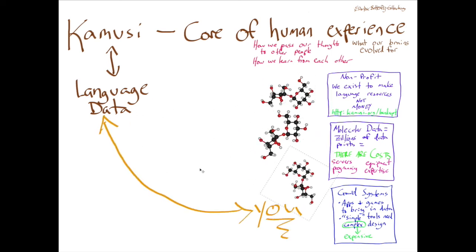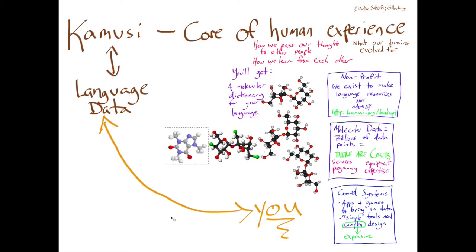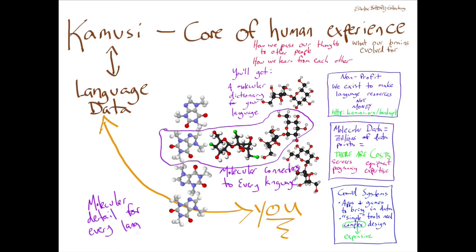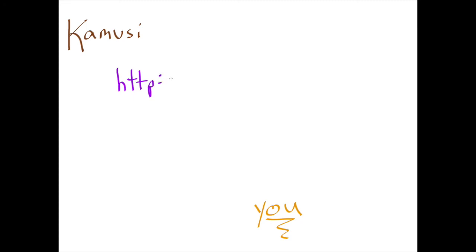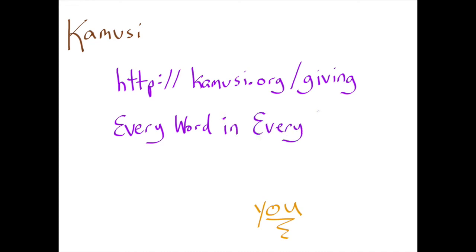In return, over time, you'll start getting a molecular dictionary for your language, as well as a data set providing core data for advanced technology applications. Your language will be linked at this molecular level to every other language in the system, and you'll support the growth of data sets for every other language — even for people who aren't in a position to pay for it themselves. There's no government ministry or academic organization with plans to build anything like this. Now, with the technology, methods, and model we've developed, it really is possible. We know that every word is overly ambitious, but it's a target worth aiming for. Thanks for watching and thanks for helping.